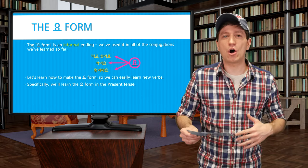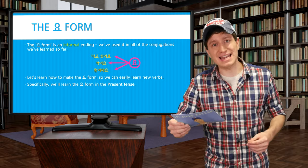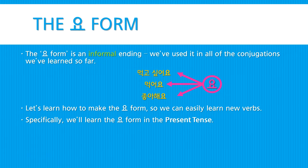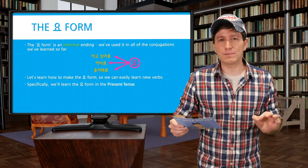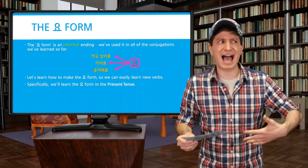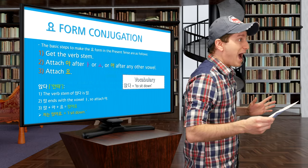What we're learning here is called the 요 form. The 요 form is an informal ending — it's not rude, but it's not overly formal. We've used it in all of the conjugations learned so far. In this lesson we're going to learn how to make the 요 form so we can conjugate new verbs and use them in sentences. Specifically, we'll be using the 요 form in the present tense — to say 'I do something,' not 'I did' or 'will do.' We'll learn those in a future lesson.